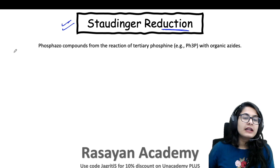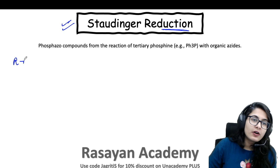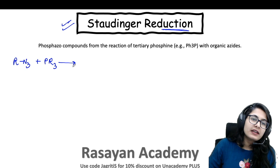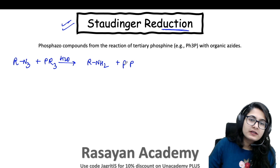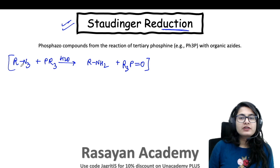First of all, what is the Staudinger reduction? A simple molecule like an organic azide, let's say RN3, when reacting with a phosphine — let's say a simple tertiary phosphine like PR3 or PPh3 — in the presence of water, is going to reduce the molecule to an amine, followed by formation of a phosphine oxide. This is the overall reaction of Staudinger reduction.